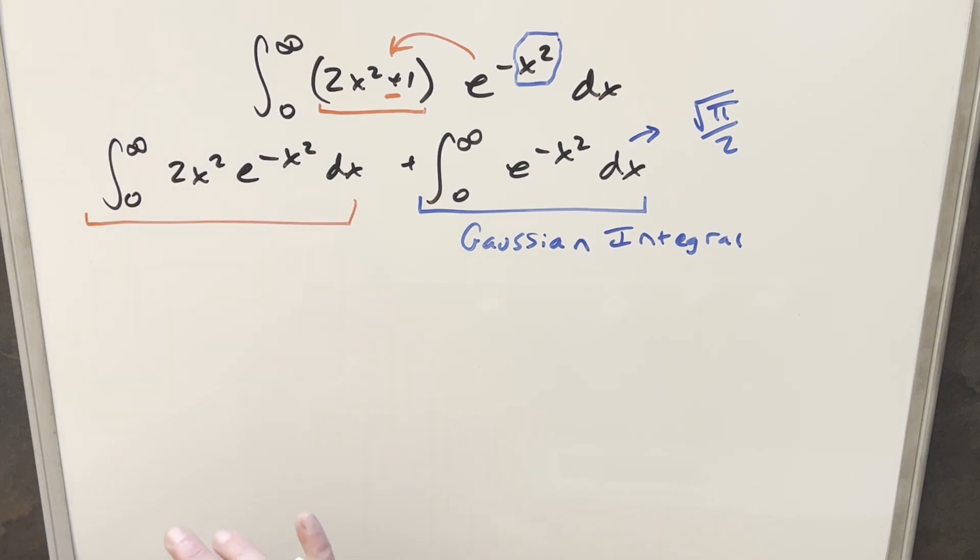And what I usually do for this, I'll usually do a u substitution and get this in the form of the gamma function. But in this case, because we already have the Gaussian integral over to the right, it'd be kind of nice if I could use that and get this into the form of the Gaussian integral as well. So for that, what I want to actually do on this is integration by parts.